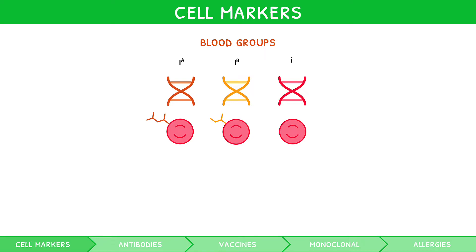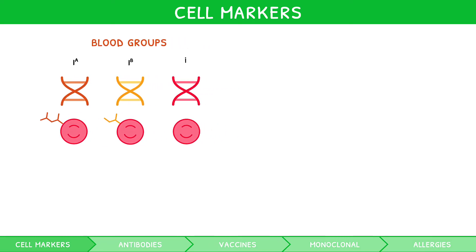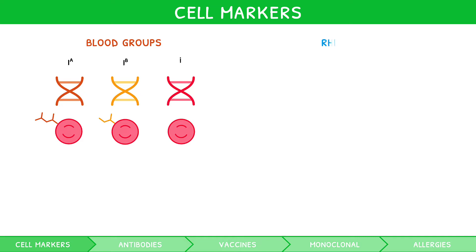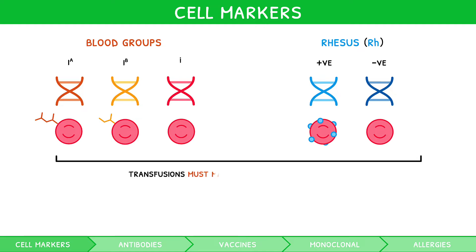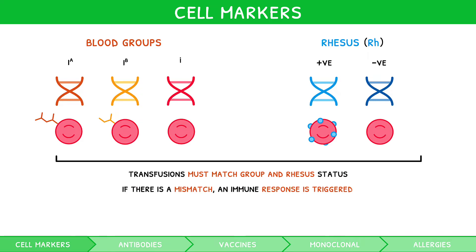However, there is an additional self-antigen on red blood cells known as the rhesus group, Rh, which can be present (positive) or absent (negative). You should understand that blood transfusions must match for blood group and Rh status. If there is a mismatch, an immune response is triggered to destroy the blood cells via agglutination, as if the blood were a pathogen.